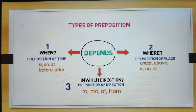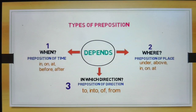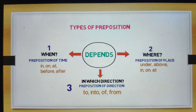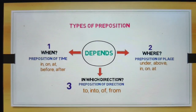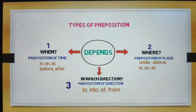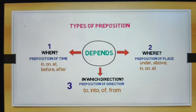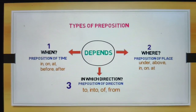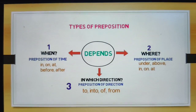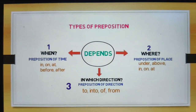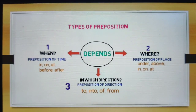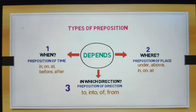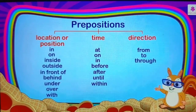First, preposition of time tells us when an action or event happens or happened. Whereas preposition of place tells us where someone or something is. And the third type, preposition of direction, tells us in which direction the action is happening. Here are some examples of prepositions.